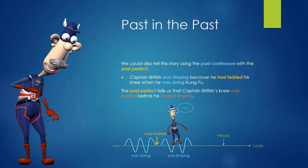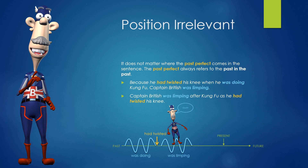Past in the past. We could also tell this story using the past continuous with the past perfect: Captain Britlish was limping because he had twisted his knee when he was doing kung fu. The past perfect tells us that Captain Britlish's knee was twisted before he started limping. It does not matter where the past perfect comes in the sentence — the past perfect always refers to the past in the past. Because he had twisted his knee when he was doing kung fu, Captain Britlish was limping.